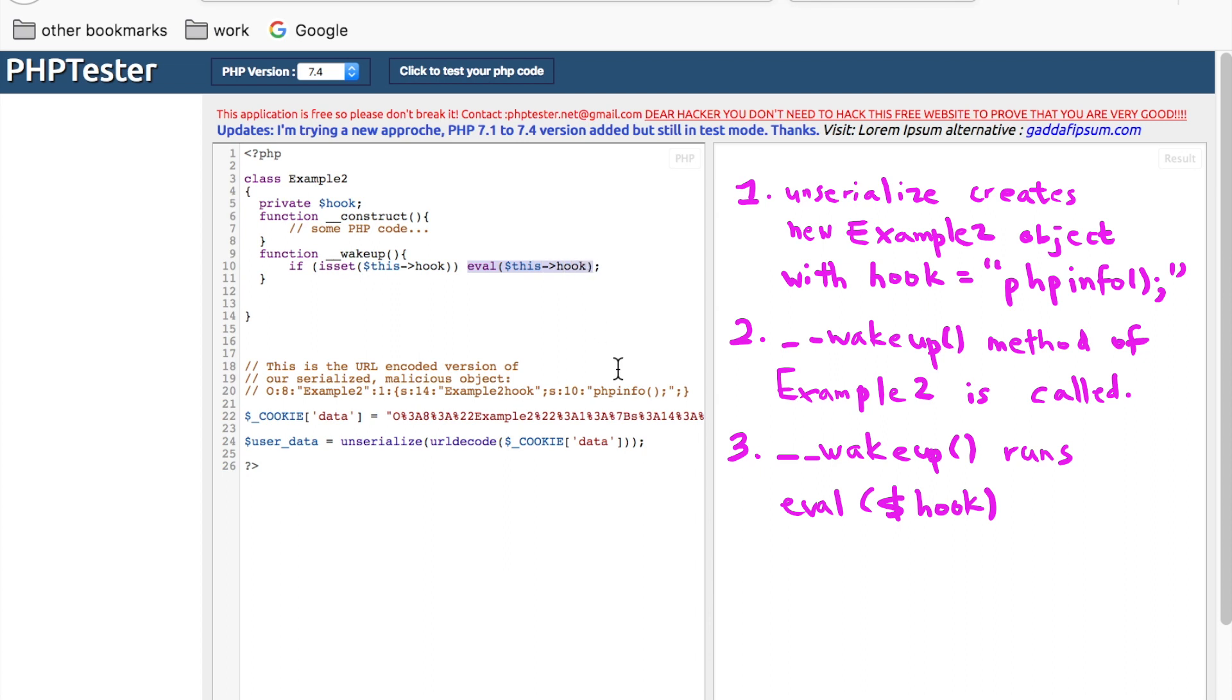In your malicious object, hook is not null and is set to phpinfo instead. So phpinfo is run. Finally, you have executed your malicious code and RCE is achieved.